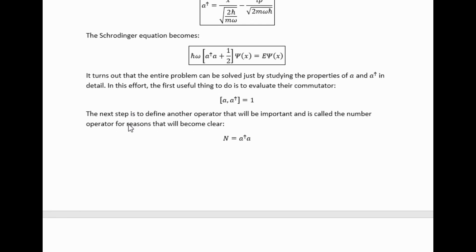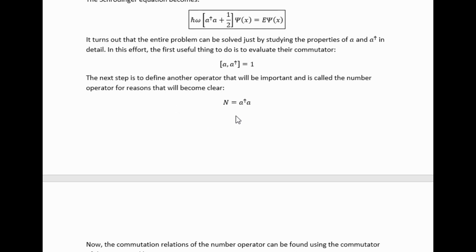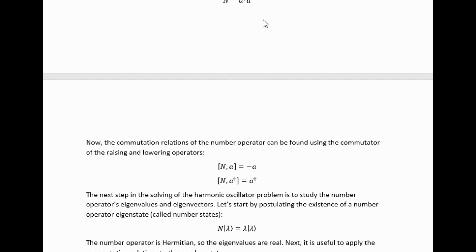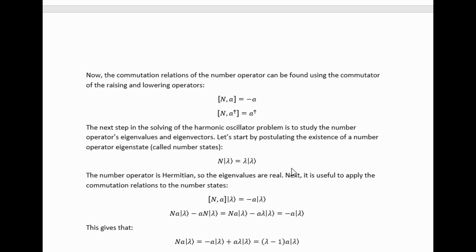In this effort, the first useful thing is to evaluate the commutator and then construct this operator, which is called the number operator. Using this commutation relation we just worked out, we can use the definition of the number operator to work out these two commutation relations.